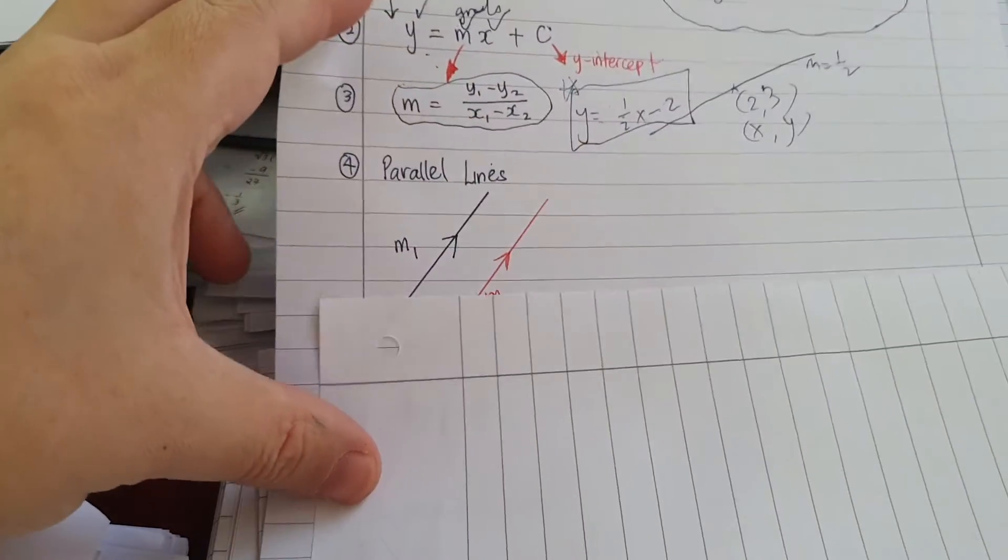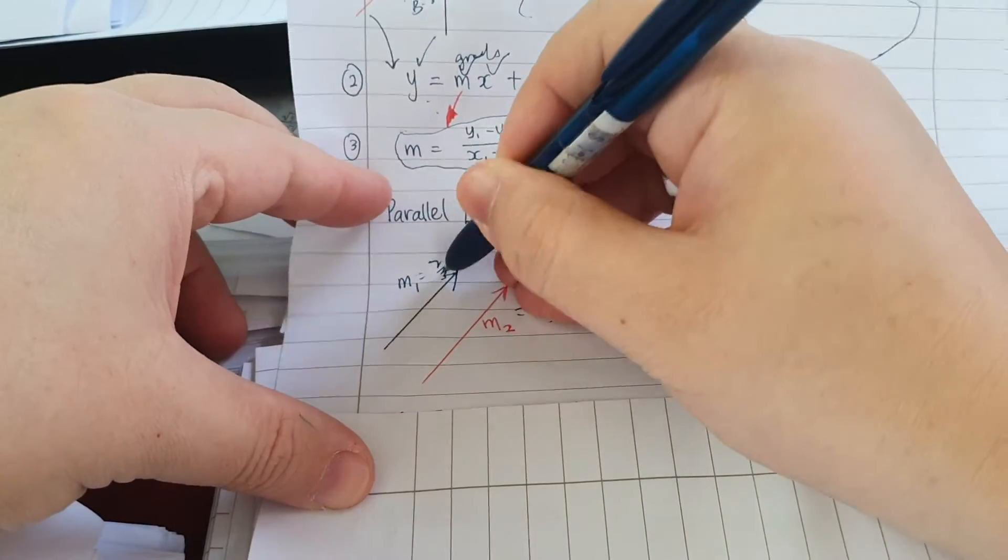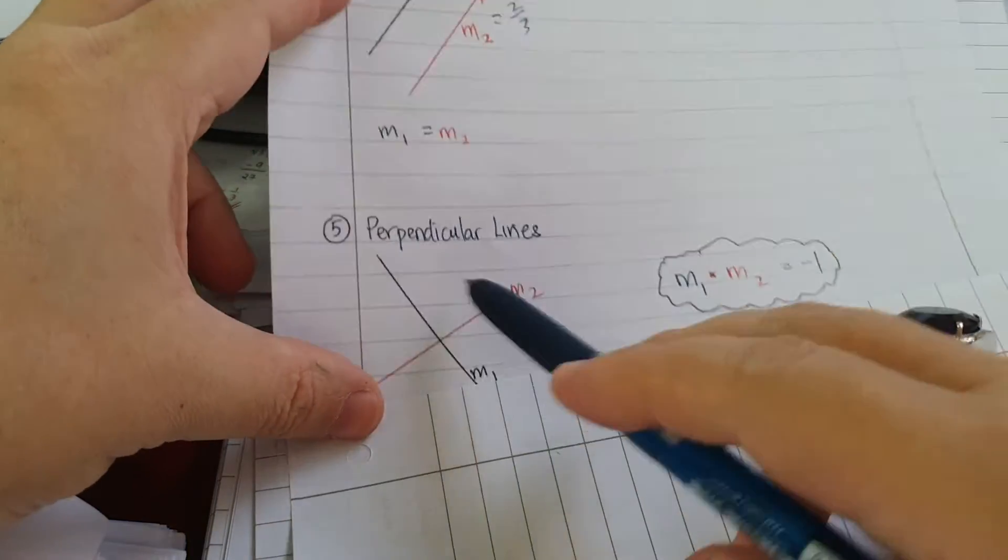Now, parallel lines, you know parallel lines have the same gradient. So let's say this is two-thirds, this will be two-thirds. This is more for A max, we'll do it another time.